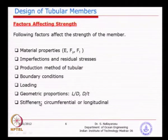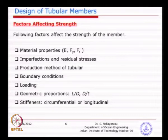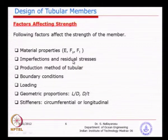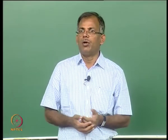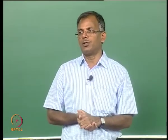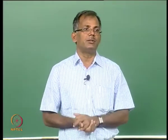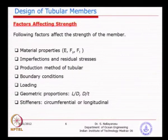When you want to assess the allowable capacity or maximum load the structure can take, you need to go through each factor and account for it with some representative parameter. For example, for imperfection you would say the diameter deviation can be 2 percent. For residual stresses, take a reduction in yield strength by 5 percent to account for fabrication-related issues. Boundary conditions must each be assessed separately. Each one plays a major role and finally you get the resistance of the structure against external loading.